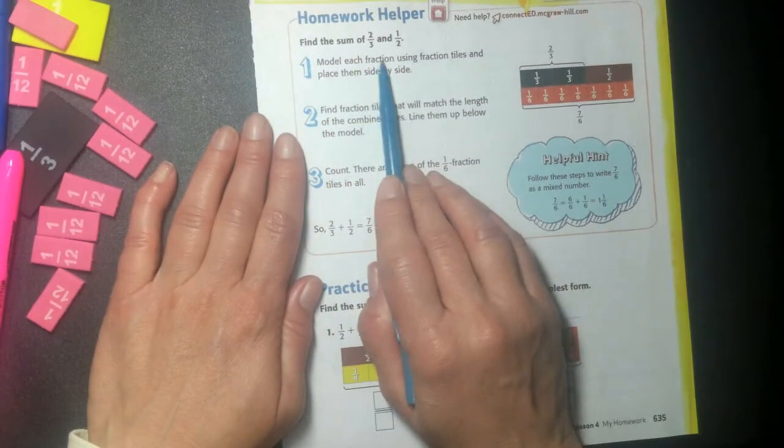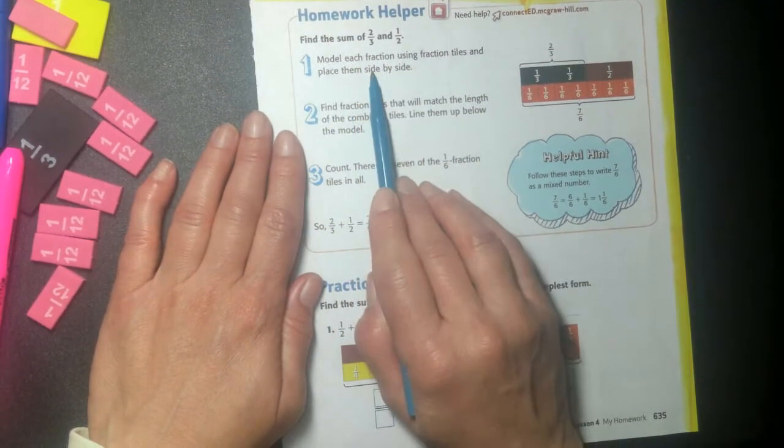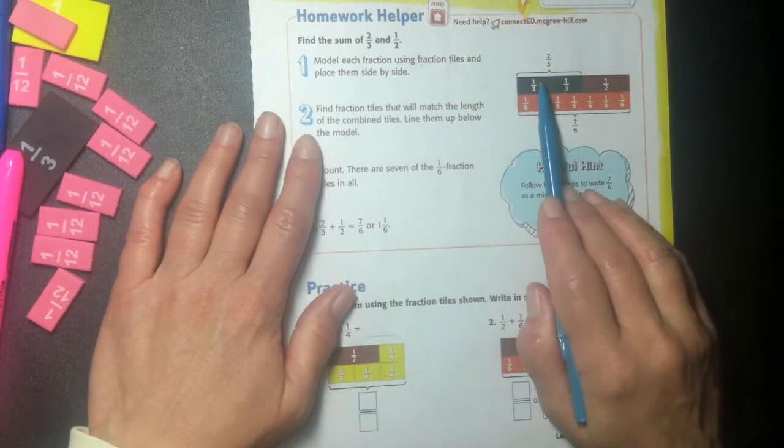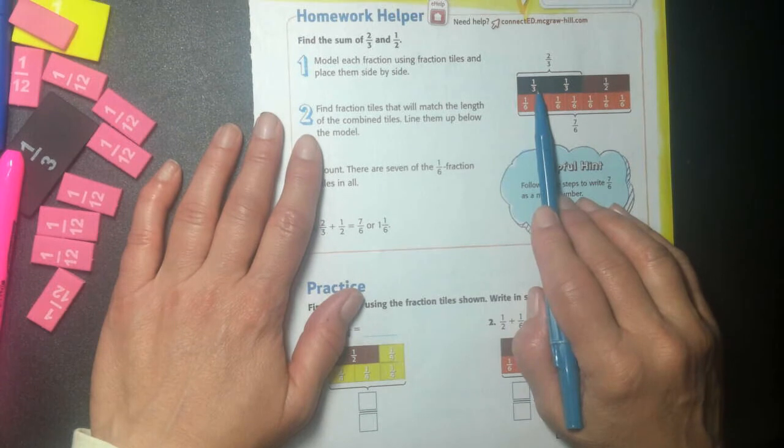My homework on page 635. Model each fraction using fraction tiles and place them side by side. So I was just using all these fraction tiles for the other pages, but I'm not going to pull them out again.